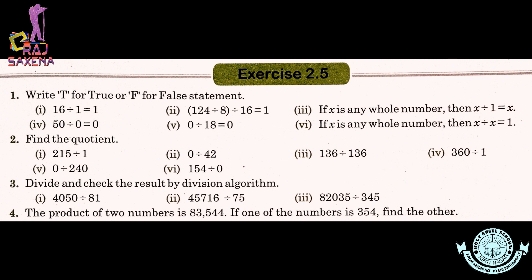Now dear students, I hope ki yeh saare topics aapko samajh mein aa gaye honge. And now I hope that you are ready to do exercise 2.5. Yahan par question number 1 hai — Write T for true and F for false. Statement 1: 16 divided by 1 is equal to 1. Statement 2: 124 divided by 8 divided by 16 is equal to 1. Statement 3: If x is any whole number then x divided by 1 is equal to x. Statement 4: 50 divided by 0 is equal to 0. Statement 5: 0 divided by 18 is equal to 0. Statement 6: If x is any whole number then x divided by x is equal to 1.